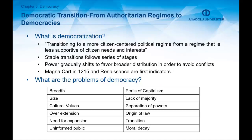Let's move on to the last topic: democratic transition from authoritarian regimes to democracies. Democratization is a process that refers to transitioning to a more citizen-centered political regime from a regime that is less supportive of citizen needs. It is a political change or transformation from an authoritarian regime to a more democratic form of government. We can observe democratization in Latin America in the 1980s, called the third wave of democratization. After the Cold War and the collapse of the Soviet Union, democratization also took place in Eastern and Central Europe, where communist regimes collapsed and were replaced by more democratic regimes.